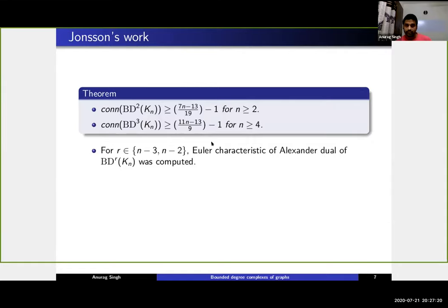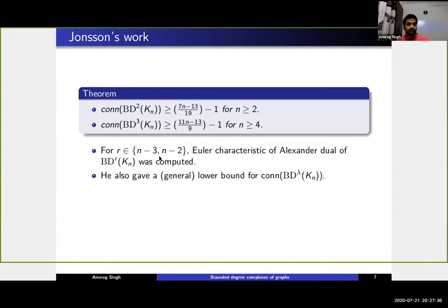For larger r, Johnson also computed the Euler characteristic of the Alexander dual of bd_r(K_n). From the Euler characteristic of the Alexander dual, it is easy to compute the Euler characteristic of the complex itself. He computed the Euler characteristic of the r-matching complex of K_n for r in {n-3, n-2}. He also gave a general lower bound for the connectivity of these bounded degree complexes of complete graphs, but acknowledged that this bound is not tight — even for lambda equal to 2, the bounds are far apart.